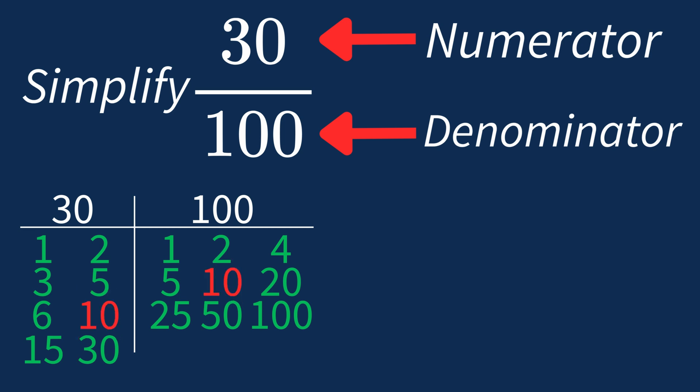This means we can divide both the numerator and denominator by 10 to simplify the fraction. Dividing the numerator 30 by 10 gives us 3. Dividing the denominator 100 by 10 gives us 10.